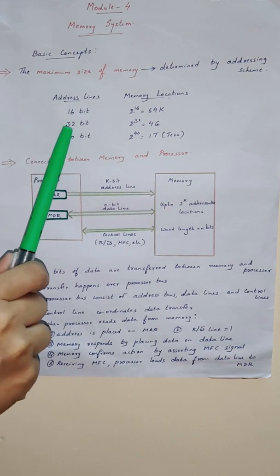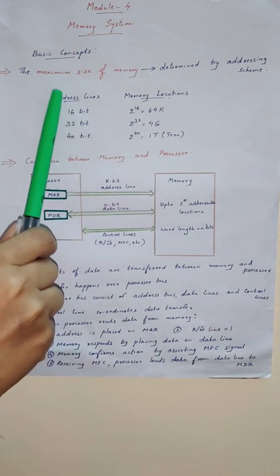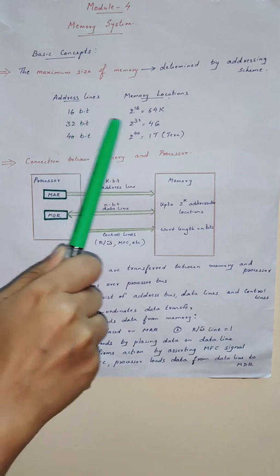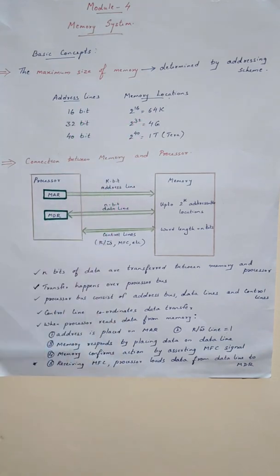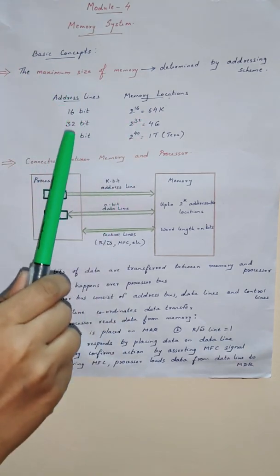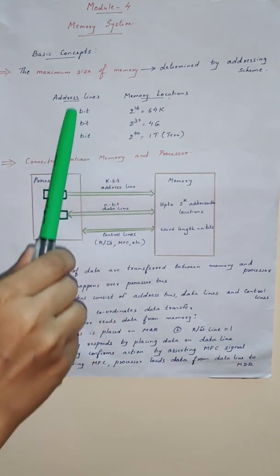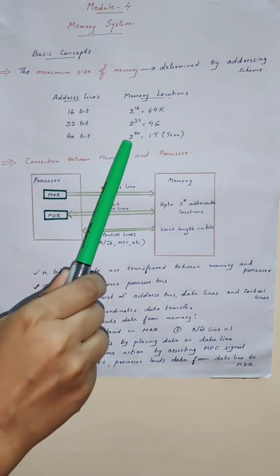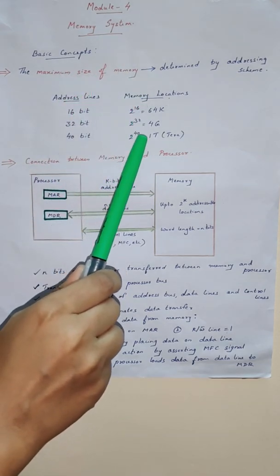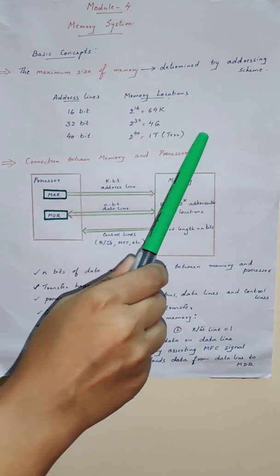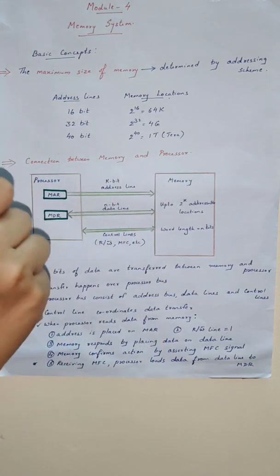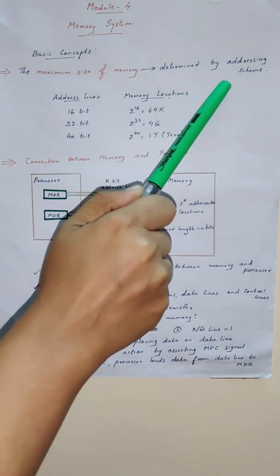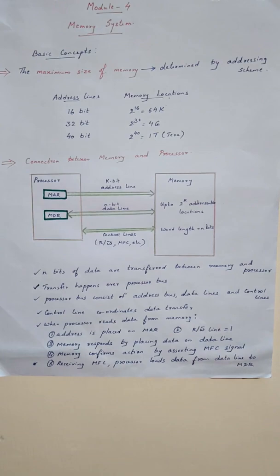If our system has a 32-bit address line, then the maximum size of the memory of the system is 2 to the power 32. If our system has a 40-bit address line, the maximum size of the memory is 2 to the power 40, that is 1 terabyte of memory. So the maximum size of the memory is determined by the addressing scheme.